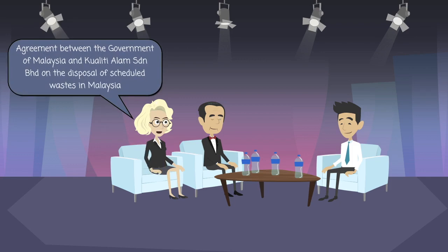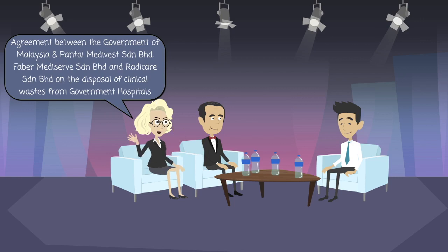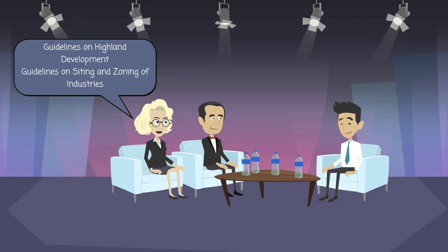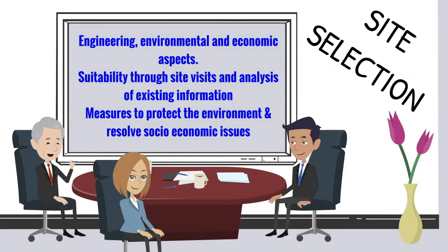Other criteria include the agreement between the government of Malaysia and Kualiti Alam Sdn Bhd on the disposal of scheduled wastes in Malaysia, the agreement between the government of Malaysia and Pante Medivest Sdn Bhd, Faber Mediserv Sdn Bhd, and Radikar Sdn Bhd on the disposal of clinical wastes from government hospitals, Guidelines on Highland Development, and Guidelines on Siting and Zoning of Industries. The criteria for selecting a new site normally include engineering, environmental, and economic aspects.